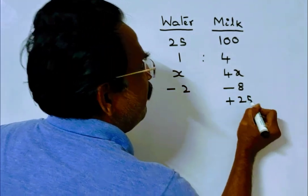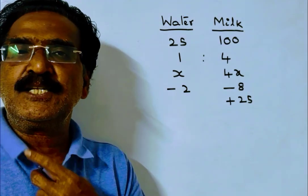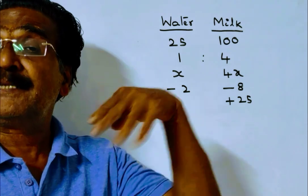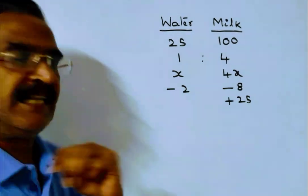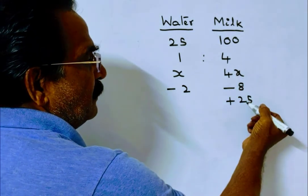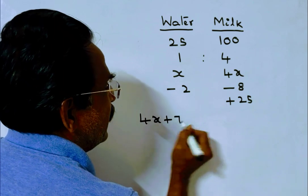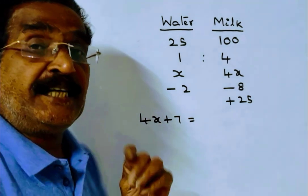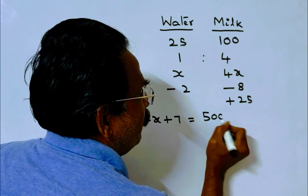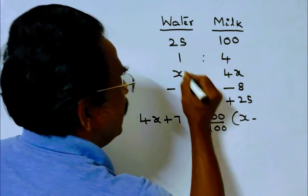After these two operations, it is given that the quantity of milk is 400 percent more than the quantity of water. So the quantity of milk, 4x plus 17, equals 400 percent more, which means 500 percent of water. That's 5 times (x minus 2). Hence, 4x plus 17 equals 5x minus 10.